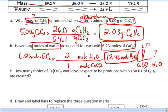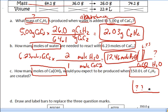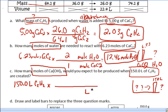So 6.23 times 2 divided by 1 is going to be 12.46 moles of water. Let's scroll down to the next one. How many moles of Ca(OH)2 would you expect to be produced when 150 liters of C2H2 are created? So now I know I'm going to produce 150 liters of this stuff. I want to know how much of the calcium hydroxide is also going to go with it. So I start with 150.0 liters of C2H2. Make sure you put that liters there so you know it's liters that you're focusing on and not mass or moles. And the fact that it's C2H2.